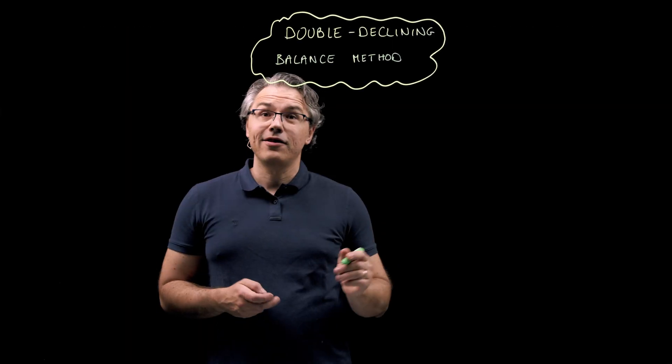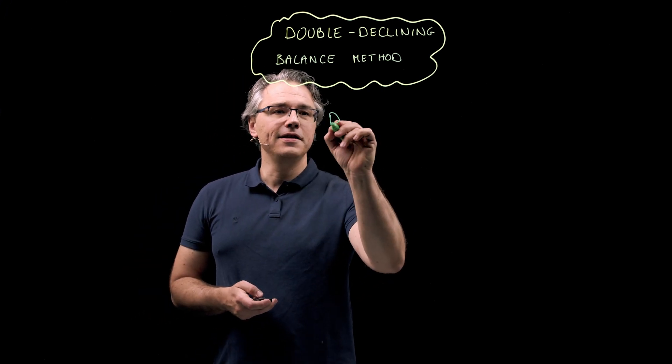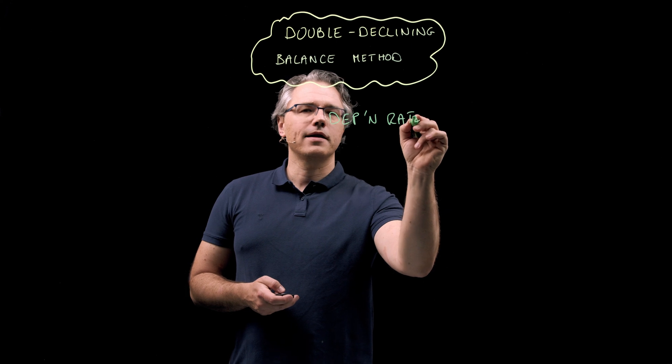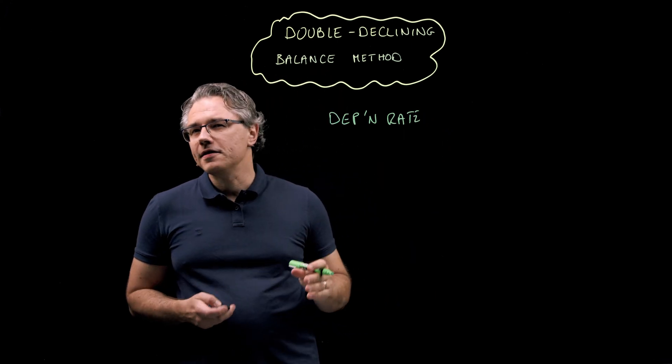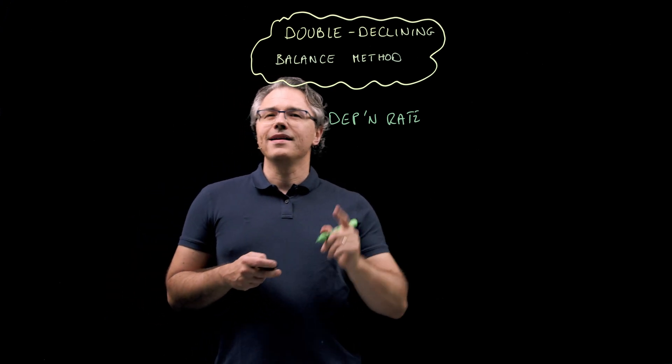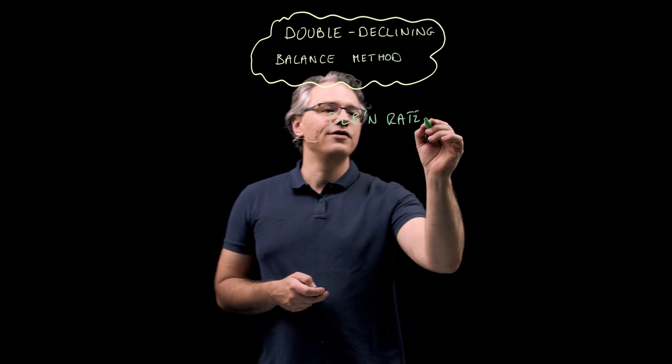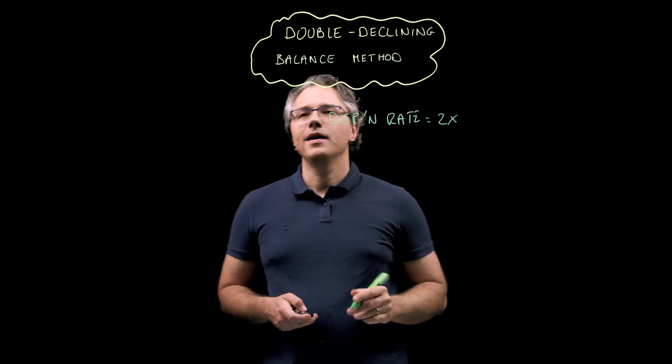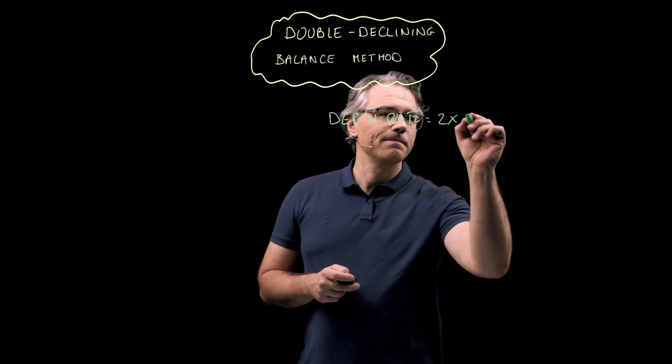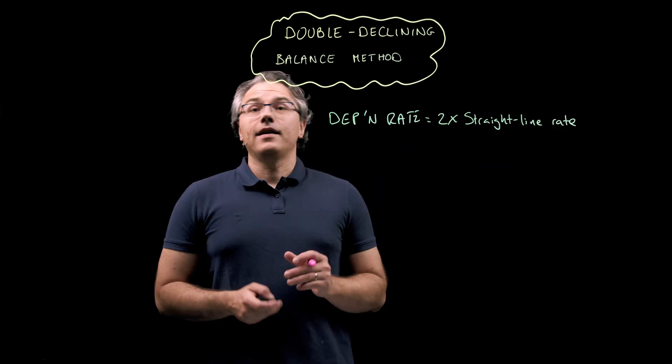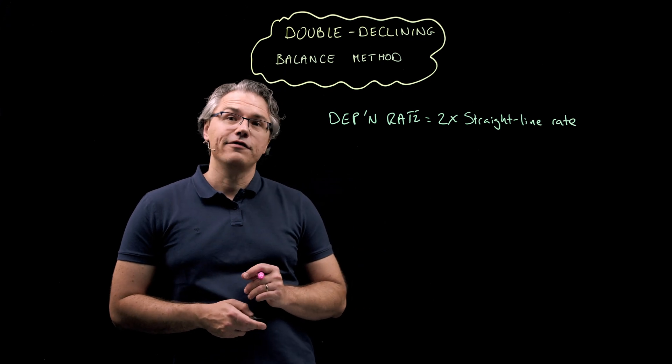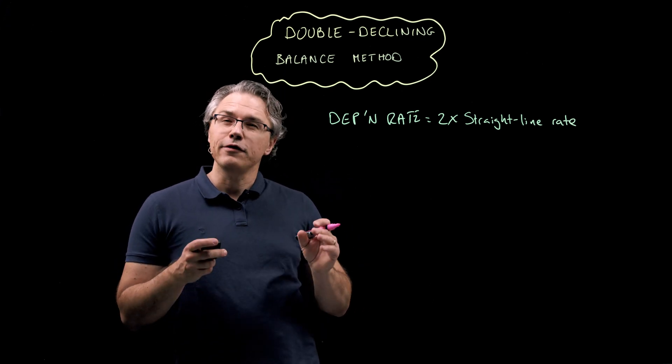Let's start by computing the depreciation rate. The trick here is to appreciate that under the double declining balance method, this rate is double what it would be if we were following the straight line approach. Now, we are told in the question that the asset has an expected useful life of five years.